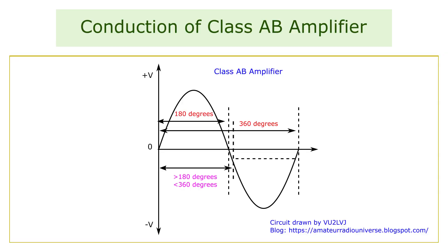Functioning of class AB audio power amplifier. The class AB complementary pair transistor audio amplifier is a configuration that works using the push pull audio power amplification method. The class AB amplifier is a combination of class A and class B amplifiers. Here the transistors are biased in such a way that they conduct for more than 180 degrees and less than 360 degrees of the input waveform.